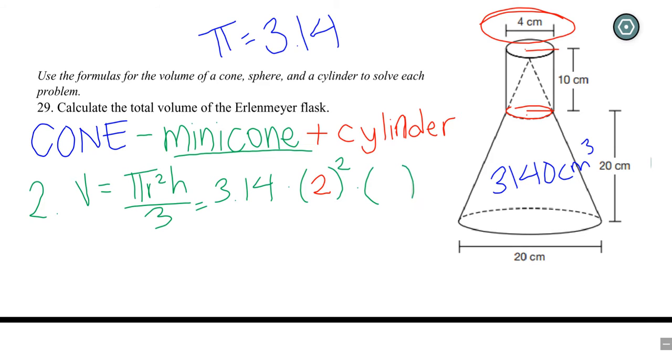And then we're going to do times the height. Which again is the distance from the bottom to the point. Which would be 10 centimeters. And then we'll divide that whole thing by 3. So you're going to type this in the calculator. So 3.14 times 2 squared which is 4 times 10. And then divide that by 3.